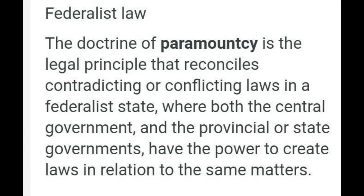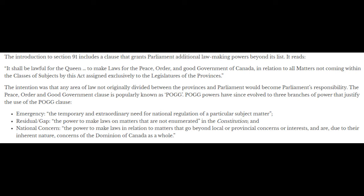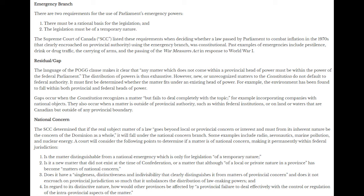We have gone over the basics of a pith and substance analysis, in which we're determining the head of powers and the extent of the infringement on either one, if there even is one. Remember that the courts typically allow a very broad allowance for the double aspects doctrine. Under the double aspects doctrine, which allows for more than one level of government to legislate, it would have to be a fairly serious infringement for a remedy to be applied. Especially read the case Morgentaler — read that one in its entirety.